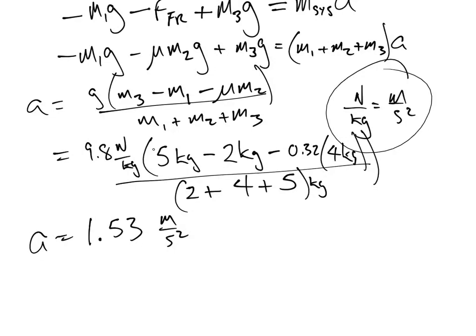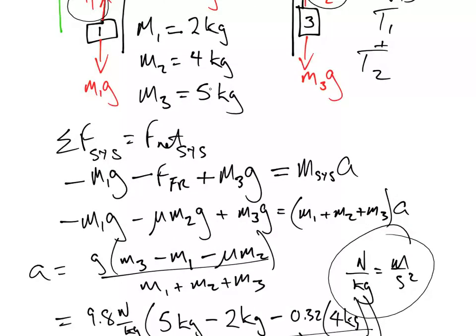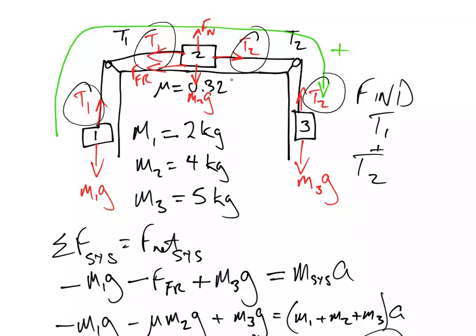And our answer for the acceleration I get is 1.53 meters per second squared. Okay. And now at this point, once again, we have a choice to make. Which free body do we want to analyze? If we picked this one at this point, we'd be making a mistake because, once again, we do T1 and T2. And so if we use this number two free body diagram, we'd get one equation and two unknowns. Instead, let's do that and that.